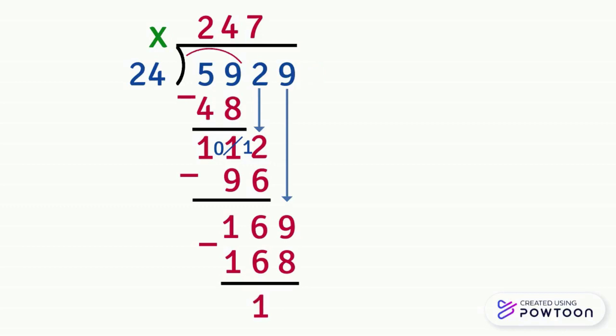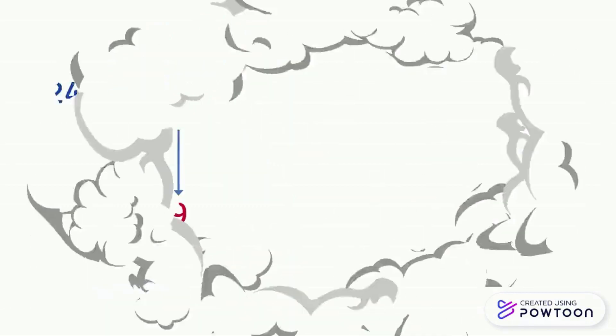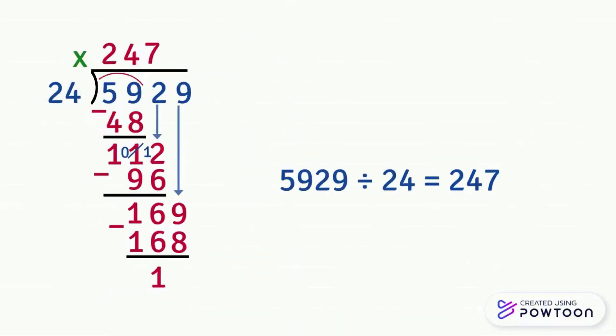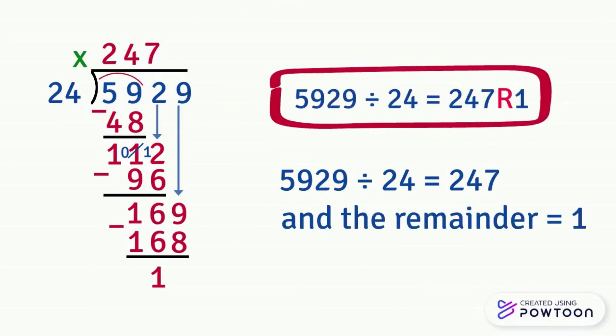Notice that the remainder must always be less than the divisor. 1 is less than 24. So 5929 divided by 24 equals 247 and the remainder equals 1. And we write it in this form since the remainder is not 0.